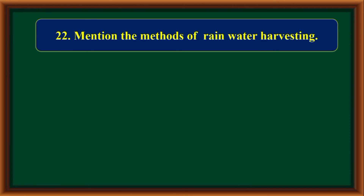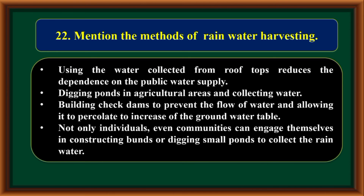Methods of rainwater harvesting include: using water collected from rooftops to reduce dependence on public water supply; digging ponds in agricultural areas and collecting water; building check dams to prevent the flow of water and allowing it to percolate to increase the groundwater table; and communities constructing bunds or digging small ponds to collect rainwater.